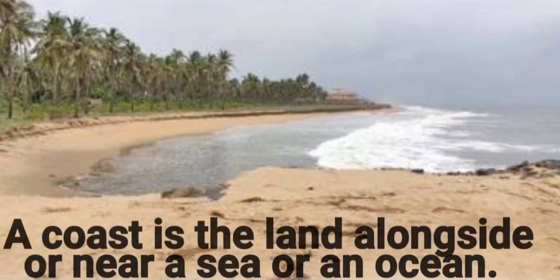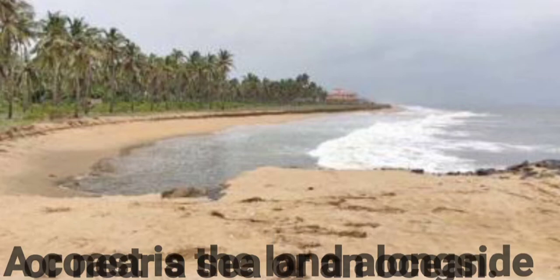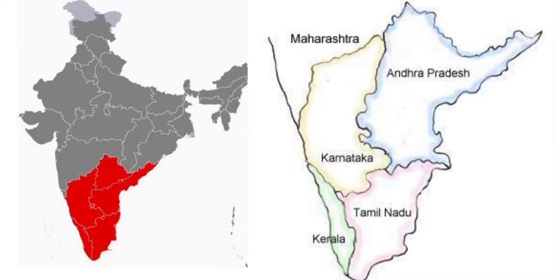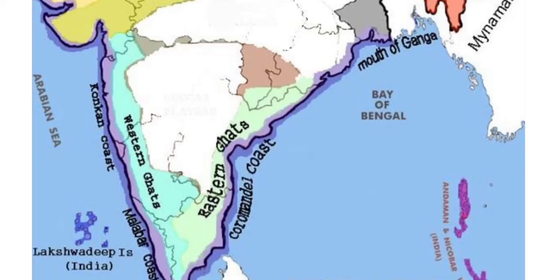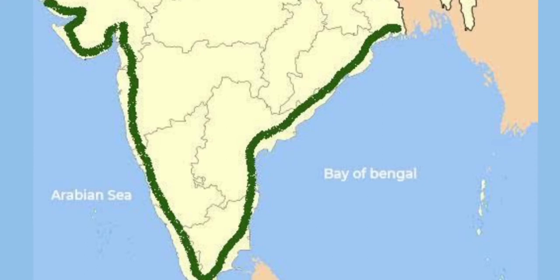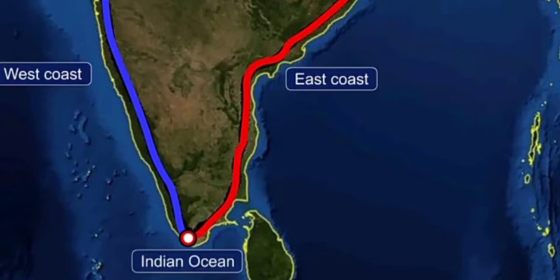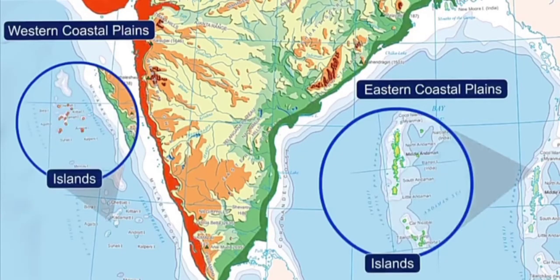A coast is the land alongside or near a sea or an ocean. It is also called a coastline or seashore. The southern part of India is triangular in shape. To the west of the Western Ghats and the east of the Eastern Ghats lie the coastal plains. The Indian coastline stretches up to 7500 km. The peninsular part of India has the Arabian Sea to its west, the Bay of Bengal to its east, and the Indian Ocean to its south. The east coast and the west coast meet at the Indian Ocean. The coastal plains comprise the western coastal plains, the eastern coastal plains, and the island groves.